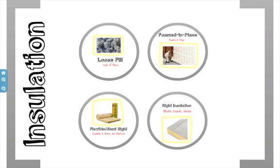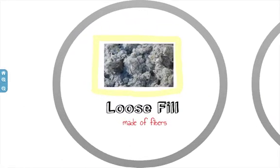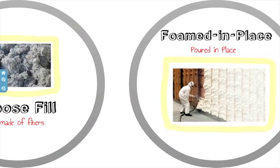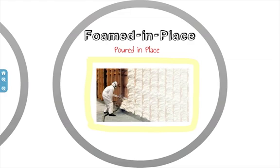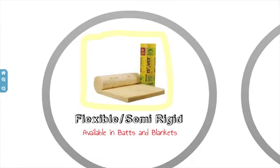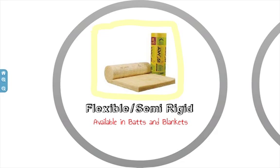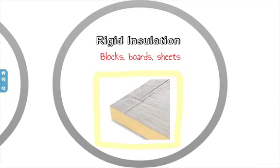There are various types of insulation on the market. The first is called loose fill, made of mineral fibers or other treated cellulose fibers that's dumped into a cavity in the wall. Foamed in place or poured in place insulation is a liquid fiber mixture poured in place; there's also a green foam alternative appropriate for more chemically sensitive people. Flexible or semi-rigid insulation is available in batts and blankets, made of glass or mineral wool. Rigid insulation comes in blocks, boards, or sheets, made of plastic or cellular glass.